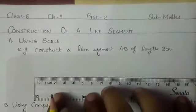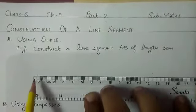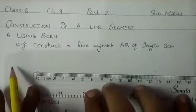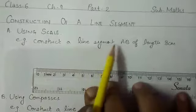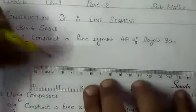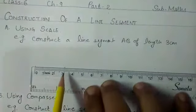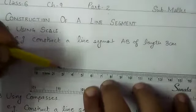First of all, with the help of a scale, mark a point. I have marked my point at initial point zero. You should also mark your point in the same way. Now, as we want to draw a segment of length 3 centimeter, we should draw a dot at point 3, exactly 3.